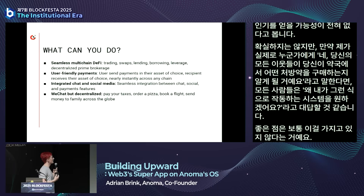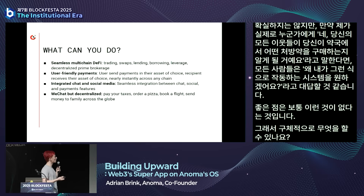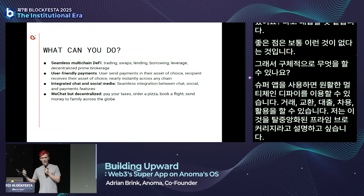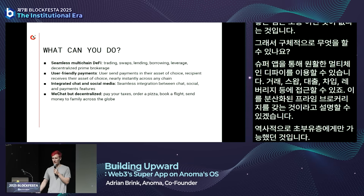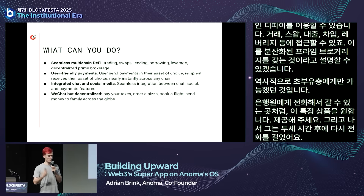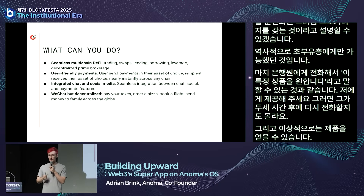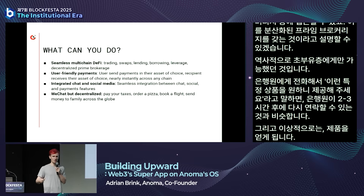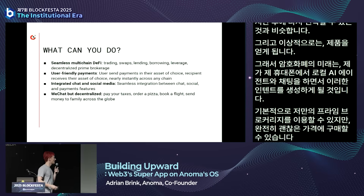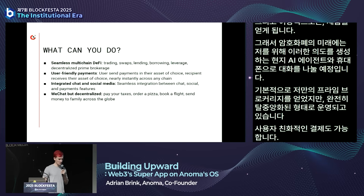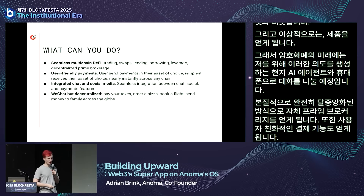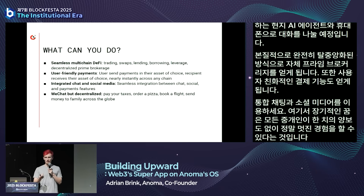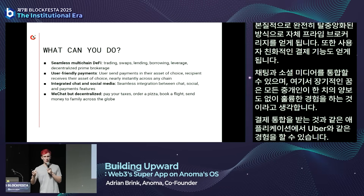With the super app you get seamless multi-chain DeFi—trading, swaps, lending, borrowing, leverage. I would describe this as decentralized prime brokerage, something historically only available to the super wealthy, where you'd call your banker and request a specific product. For the future of crypto, you'll just be chatting on your phone with your local AI agent, generating intents, and getting your own prime brokerage in a fully decentralized way. You also get user-friendly payments, integrated chat and social media, and the long-term dream of an Uber-like experience without Uber taking a 20–30% cut.